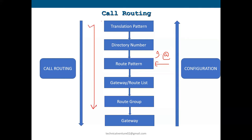To summarize the call routing direction: it hits the translation pattern first, then checks the directory number; for external calls it checks the route pattern, then goes to the route list or gateway depending on configuration. Under the route list there is a route group, and under that route group are the gateways. For configuration order, you must add the gateway first, then the route group, then the route list, and finally the route pattern — because each depends on the one below it.